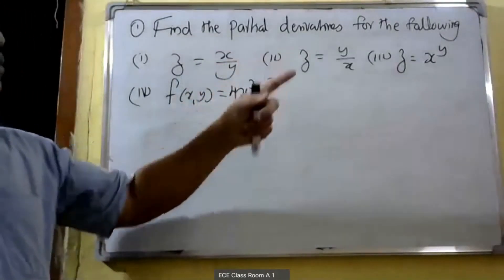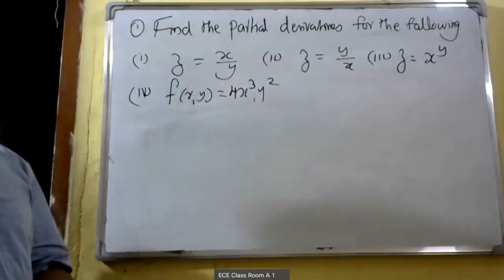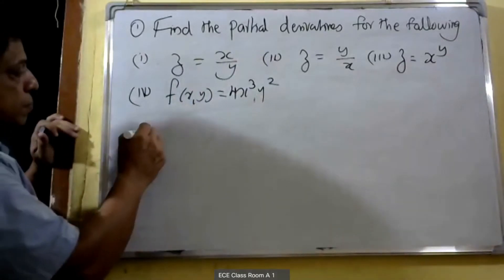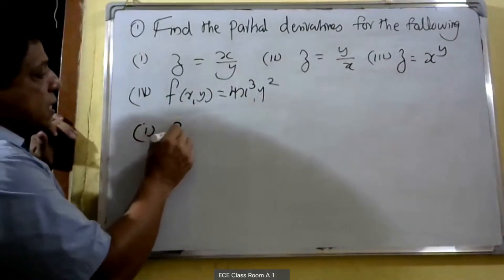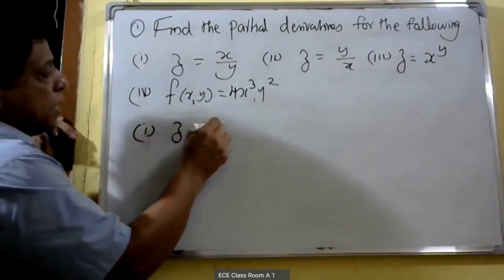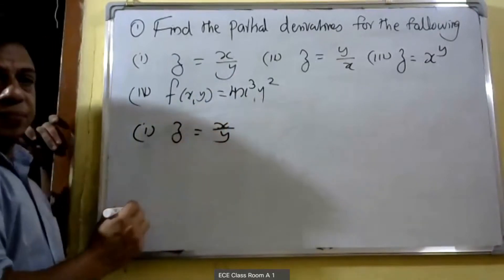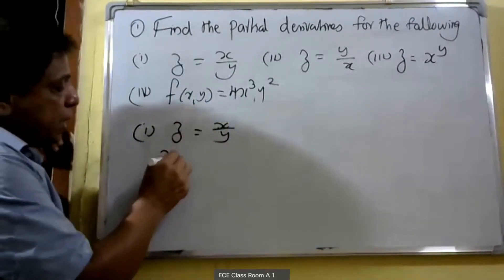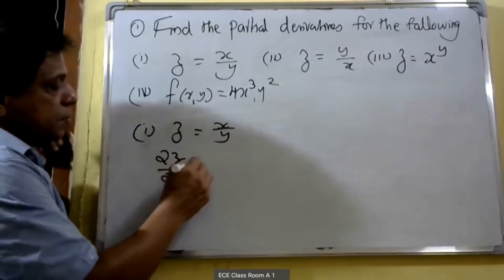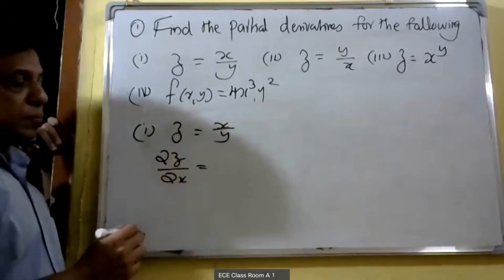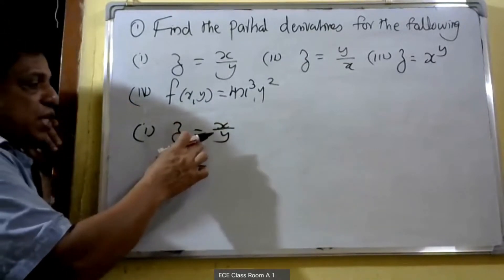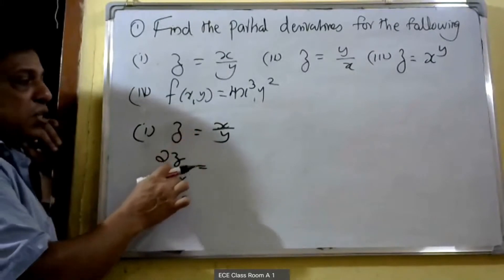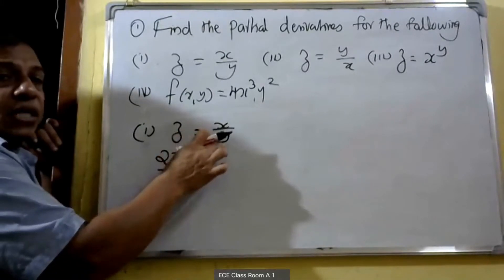Find the partial derivative of the following functions. The first problem: z is equal to x divided by y. Here we have to find ∂z/∂x. When we are partially differentiating this function with respect to x, y is the constant.